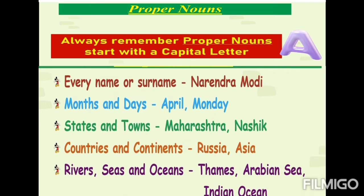Proper nouns always start with a capital letter. For example, every first name or surname — the first letter always starts with a capital letter. Look at Narendra Modi: both the first name and surname start with a capital letter. Similarly, months and dates — April starts with a capital letter, and days like Monday also start with a capital letter. States and towns like Maharashtra, countries and continents like Russia and Asia, and rivers, seas, and oceans like Thames, Arabian Sea, and Indian Ocean all start with capital letters.